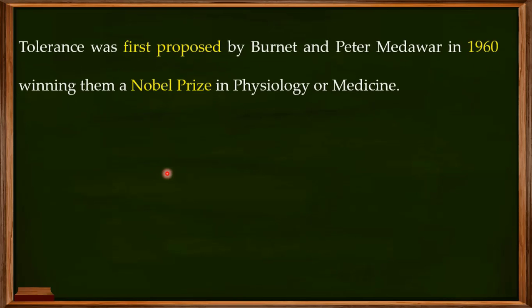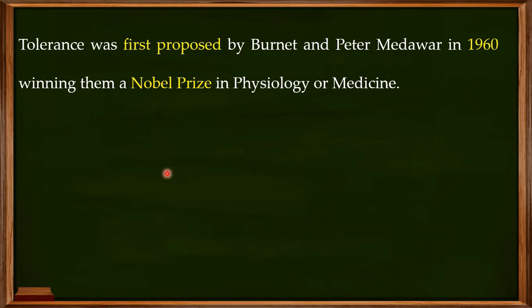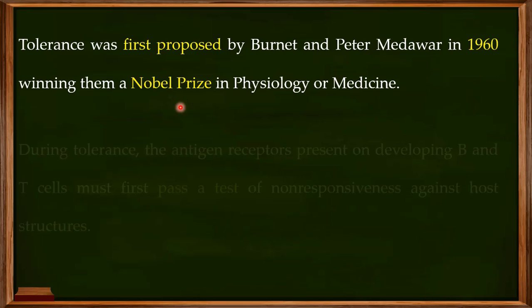Historically, tolerance was first proposed by Burnett and Peter back in the 1960s, and for this tremendous discovery, they were awarded the Nobel Prize in Physiology or Medicine.